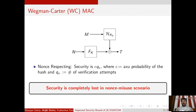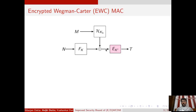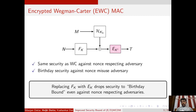To solve this problem, one natural solution was to encrypt the output of the Wegman-Carter MAC, and thus the resulting construction is known as Encrypted Wegman-Carter MAC. The security bound of this Encrypted Wegman-Carter MAC is as good as Wegman-Carter. In particular, it gives the optimal security bound in the nonce-respecting setting and additionally gives beyond birthday-bound security in the nonce-misuse setting.